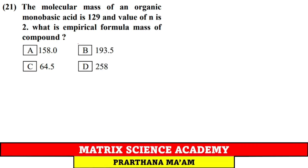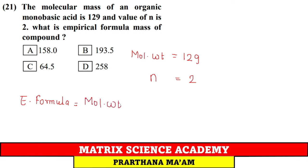Question 21: Molecular mass of an organic compound is 129, n factor = 2. What is the empirical formula mass? Empirical formula mass = molecular mass / n factor = 129 / 2 = 64.5. Option C.